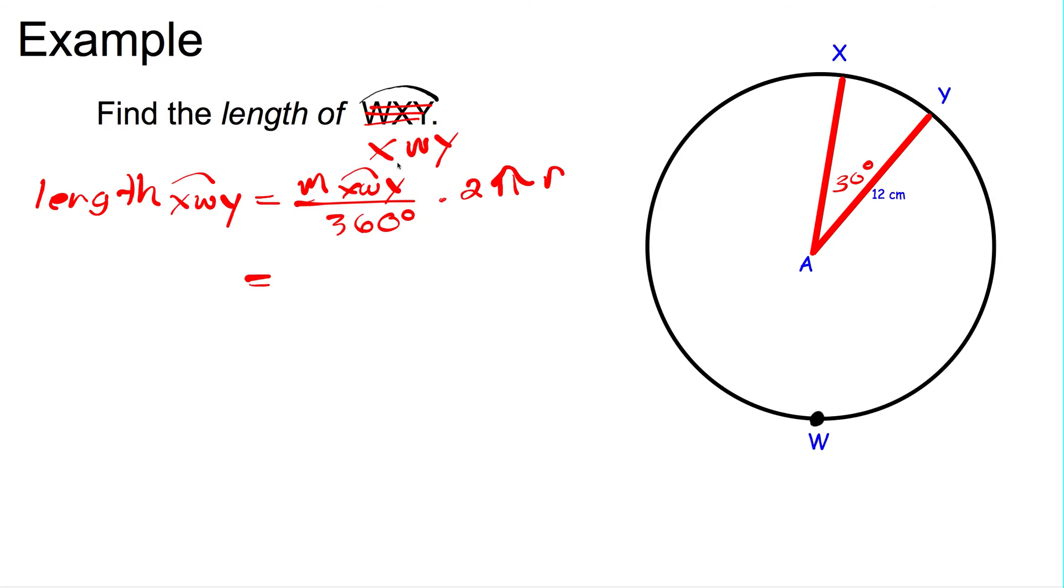The measure of arc XWY is not given. What we're given is the measure of the minor arc, XY. To find the measure of this arc from x to y, or the measure of that angle, we have to take 360 and subtract away 30. The entire circle minus the part, and that's going to be equal to 330 degrees. So we're finding the measure of the major arc, 330 degrees. We put that over 360 degrees. We multiply that by 2 pi times the radius, which is 12 meters.